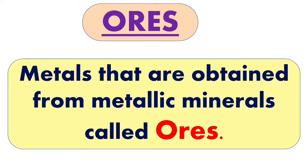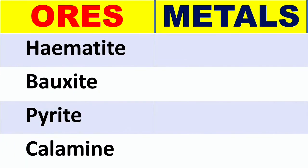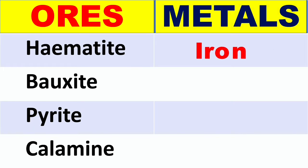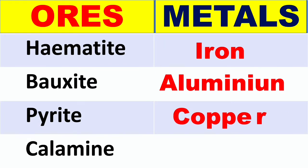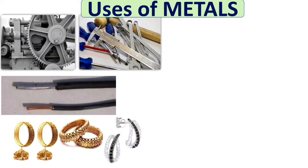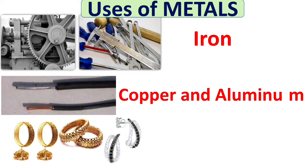Metals that are obtained from metallic minerals are called ores. For example, the metal obtained from hematite is iron, from bauxite we get aluminium, from pyrite we get copper, and from calamine we get zinc. Iron is used for making machines, tools, vehicles, and bridges. Copper and aluminium are used for making electrical wires, and gold and silver are precious metals used to make jewellery.